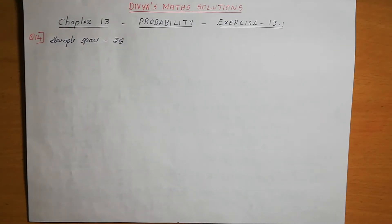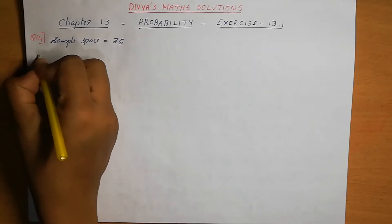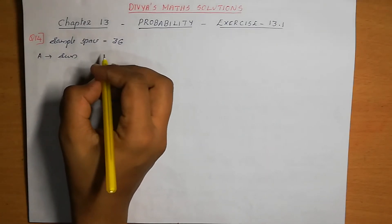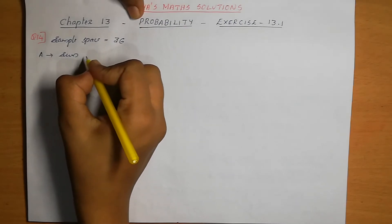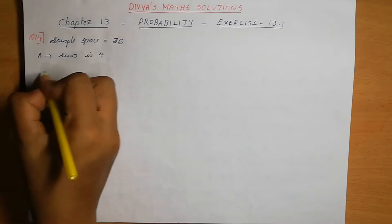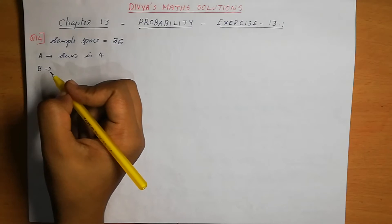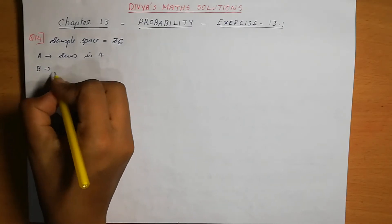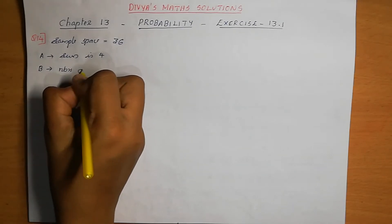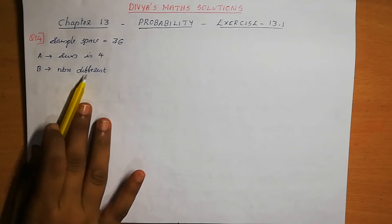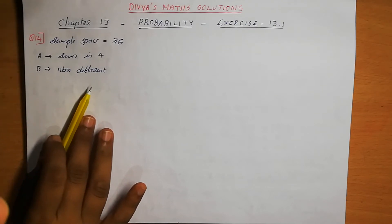Let A be the event that the sum of the numbers on the dice is 4, and B be the event that the two numbers appearing on throwing the dice are different. So we need to define both events: A as sum equals 4, and B as numbers on both dice are different.